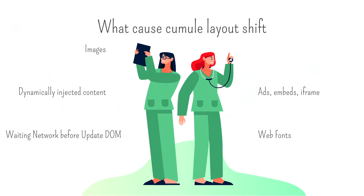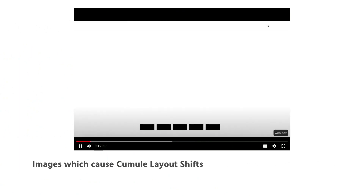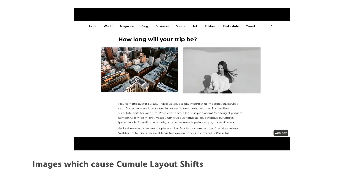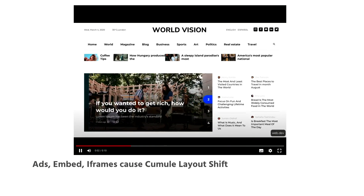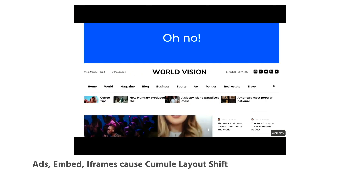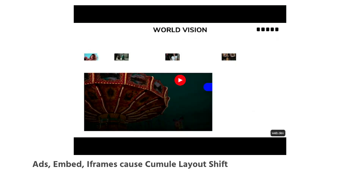What can cause Cumulative Layout Shift? Many things: images without a good ratio, with no size, or with bad size; ads, embeds, and iframes; dynamically injected content; web fonts; and waiting on the network before updating the DOM. In this video, you can see how images can cause CLS — something pops on the screen and the user loses reading focus. And in this video, you can see how ads, embeds, or iframes can cause CLS — again something pops on the screen and the user loses reading focus.